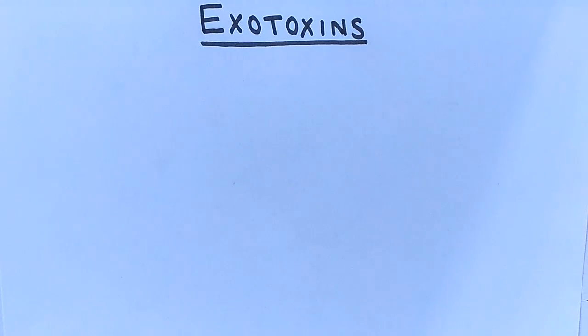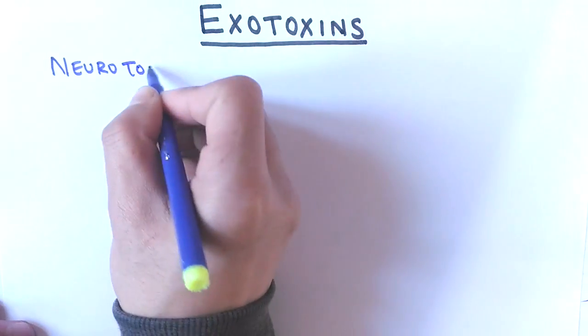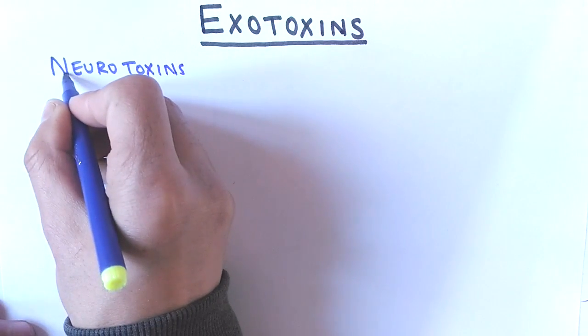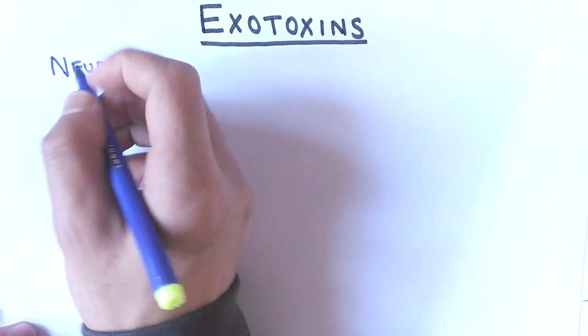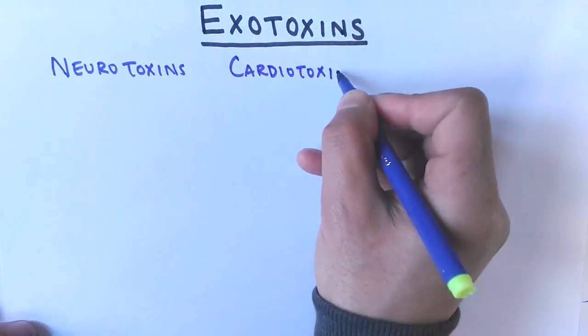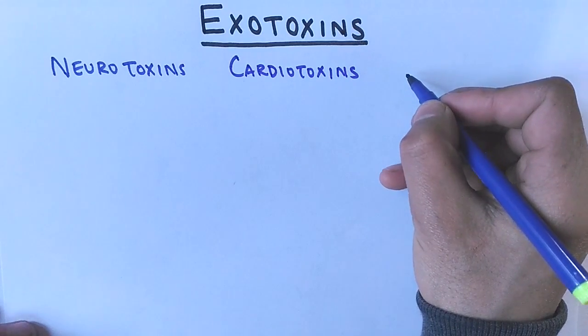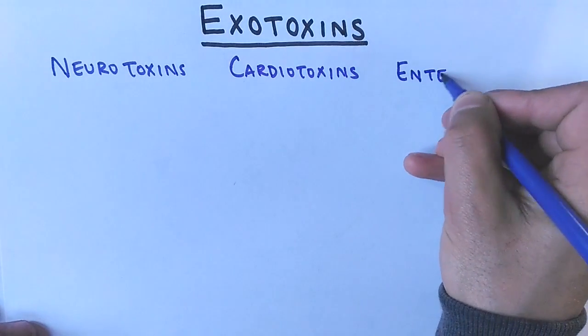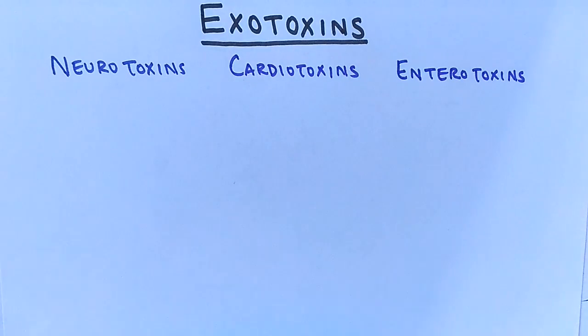We find different kinds of exotoxins like neurotoxins that affect nerve tissue, damaging it and disturbing the normal functioning of nervous tissue. Then there are cardiotoxins that affect cardiomyocytes, and enterotoxins that affect the GIT of the host, the gastrointestinal tract lining.